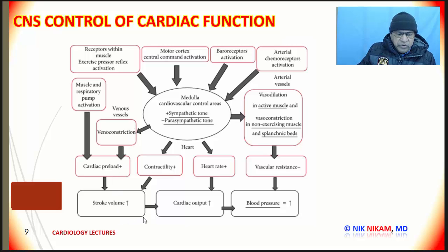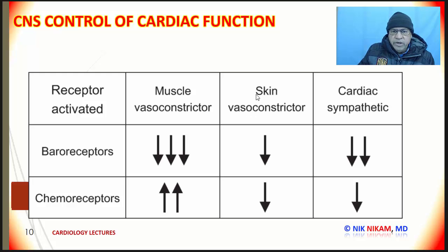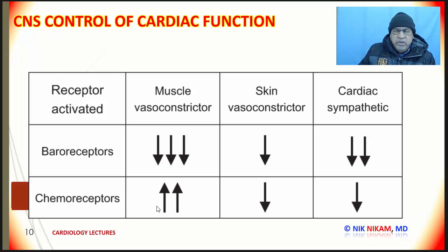Here is a chart showing the effect of baroreceptors — those that respond to changes in blood pressure — which results in muscular vasoconstriction to reduce blood supply to the muscles. It also leads to skin vasoconstriction and cardiac sympathetic activity. Whereas chemoreceptors increase muscle vasoconstriction, they decrease skin vasoconstriction, and they also decrease cardiac sympathetic activity.